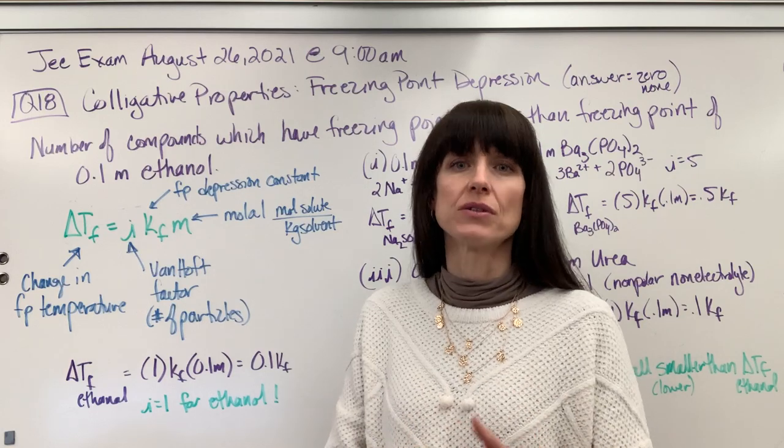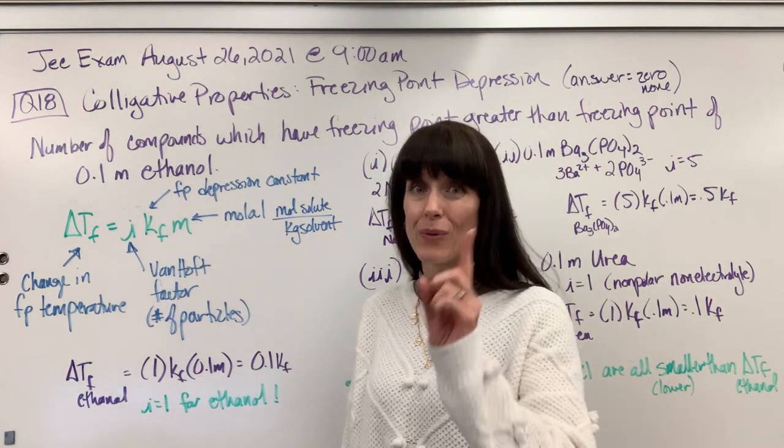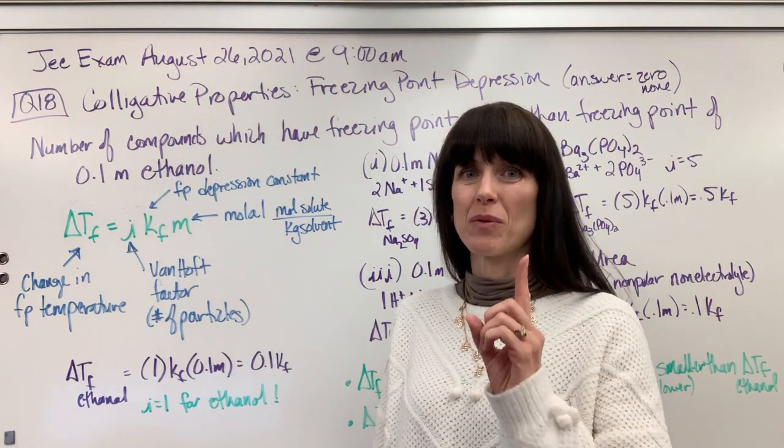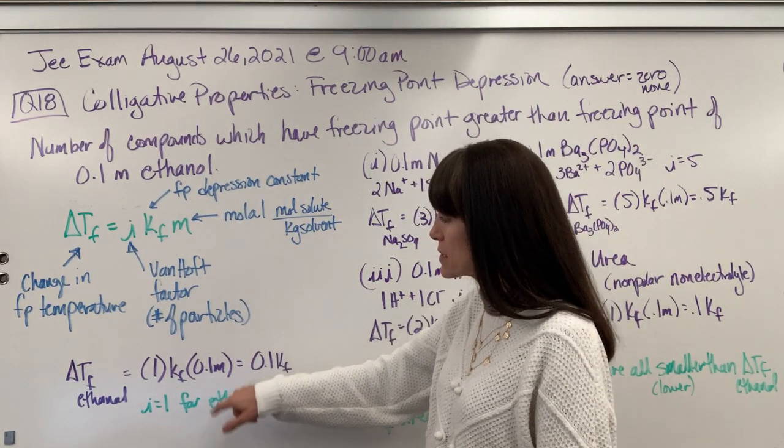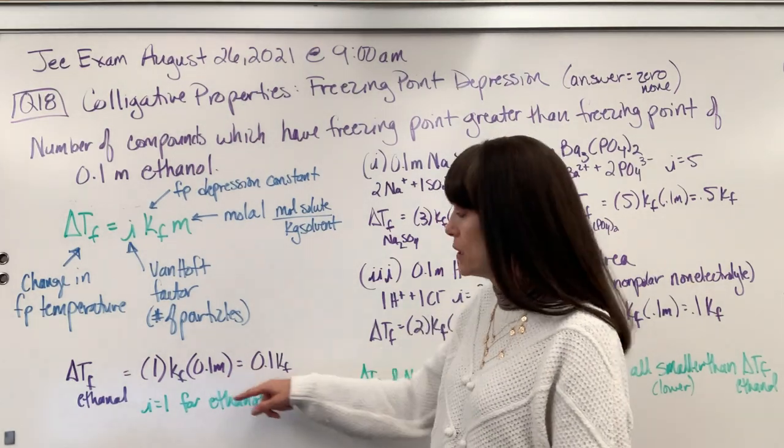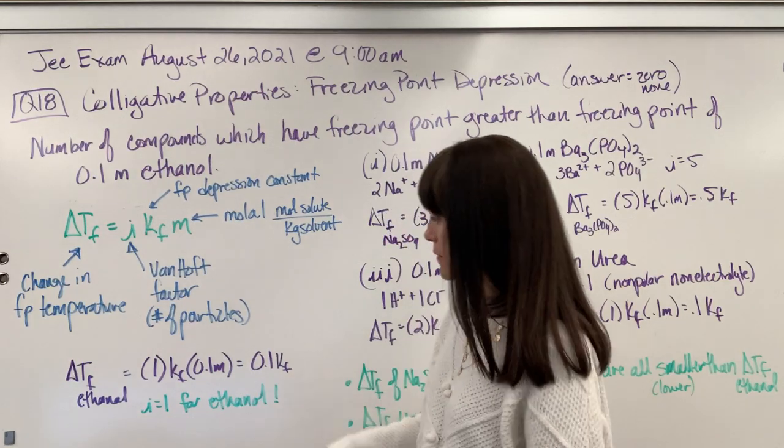So whenever you have a non-volatile, non-electrolyte, its Van't Hoff factor is always one. Non-polar molecules are always a one. So times Kf, the constant, times 0.1 molal. So you're going to end up with 0.1 times Kf. There we have it for our ethanol.